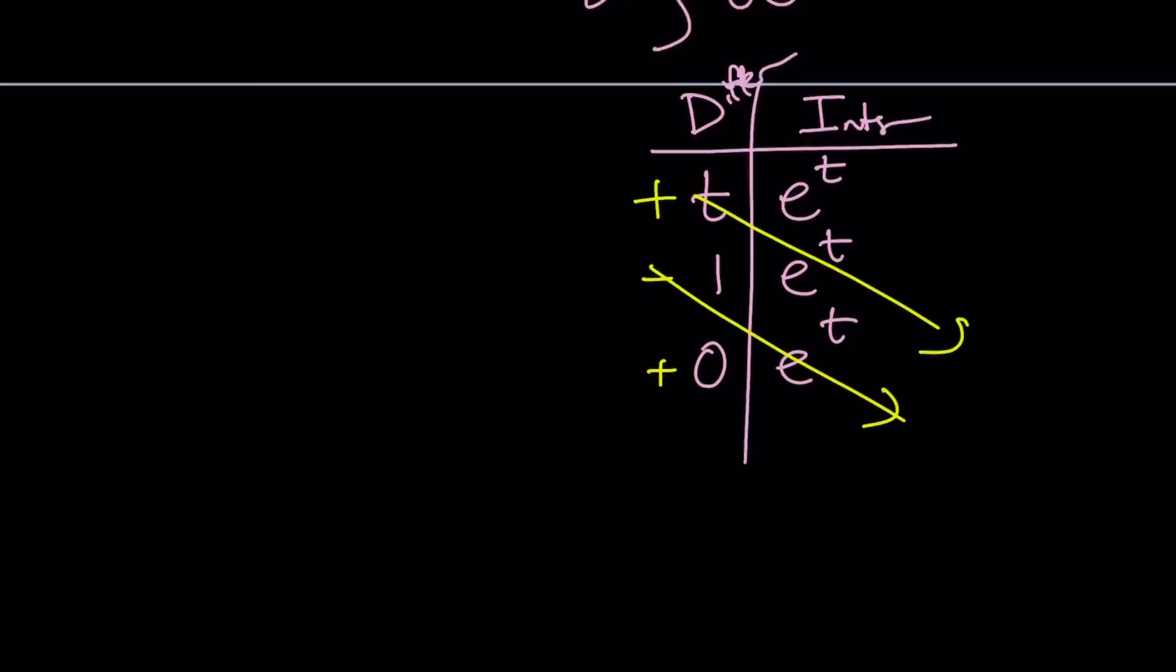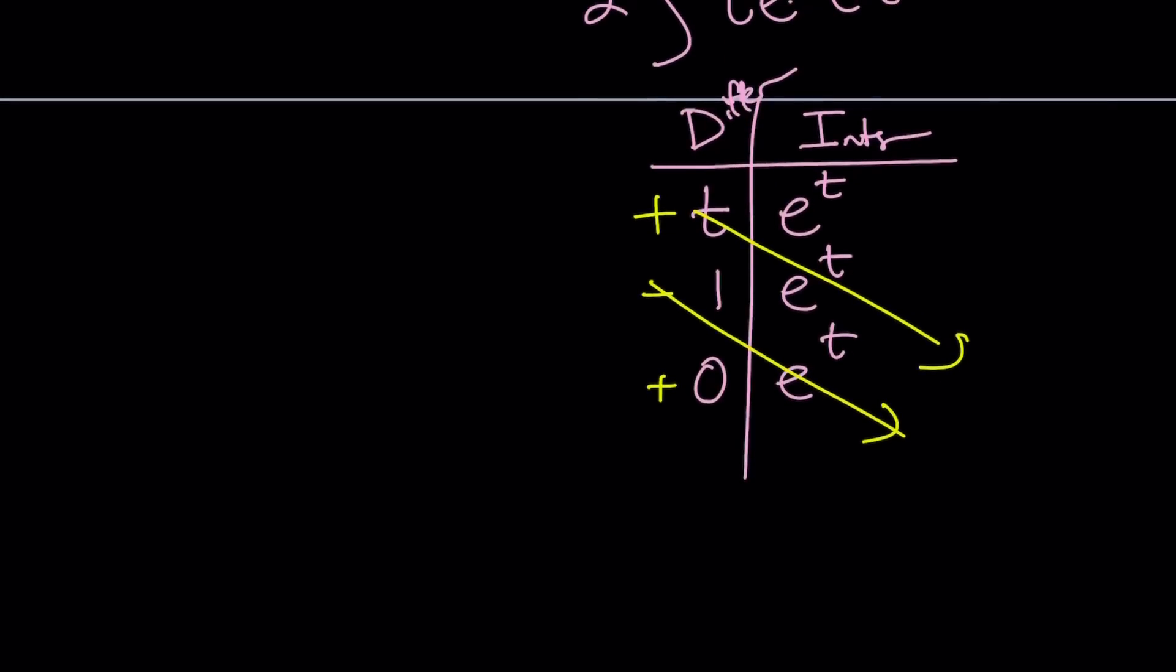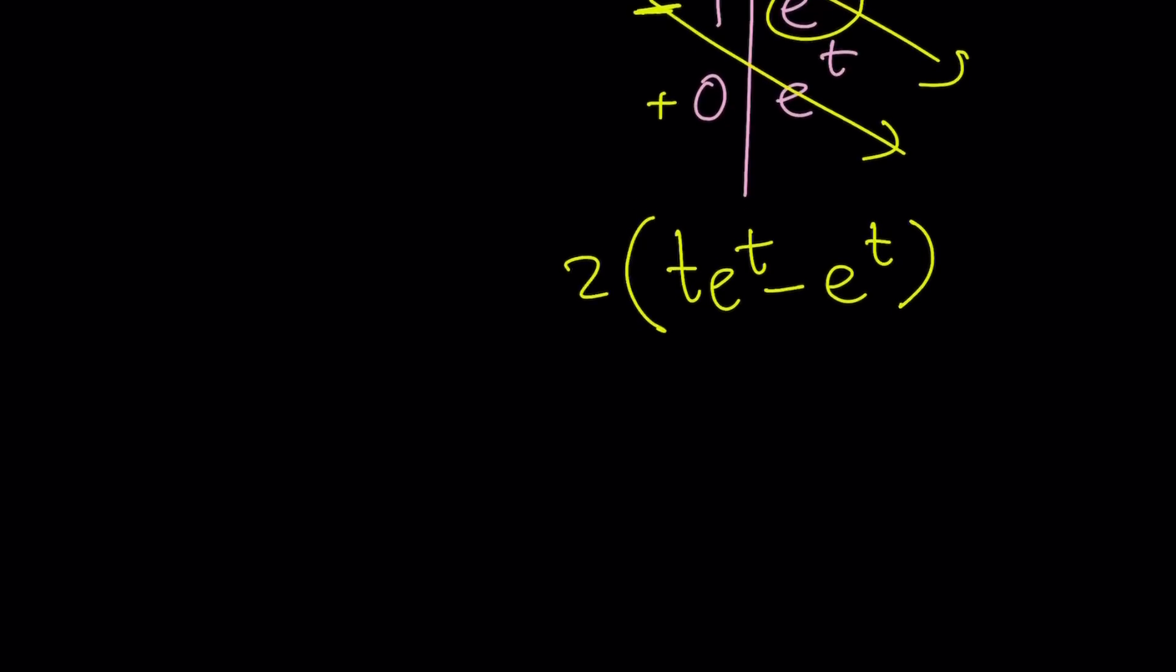All right. So our integral, to keep a long story short, is going to be 2 times. Don't forget the 2 on the outside. 2 times t e to the t. Notice that I'm multiplying these two things. That's a plus sign. Everything is good. And then minus 1 times e to the t. And that basically concludes our integral. I'm not putting the c yet because I'll do it at the end. So that's my integral.